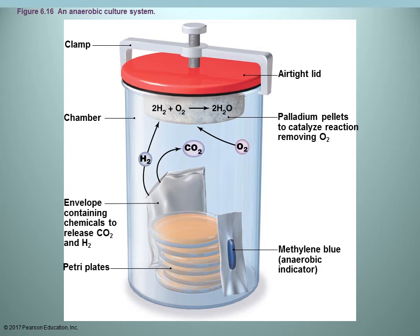Organisms have different oxygen requirements, so there are different ways to grow them. If aerobic, you can grow them in an incubator under normal conditions. If anaerobic and oxygen would kill the organism, you need special equipment. Some places use an anaerobic culture system where you place petri dishes in a container, then use packets that you rip or pop to remove oxygen. A methylene blue anaerobic indicator confirms that, once the container is sealed, the oxygen has been removed and the environment is anaerobic.